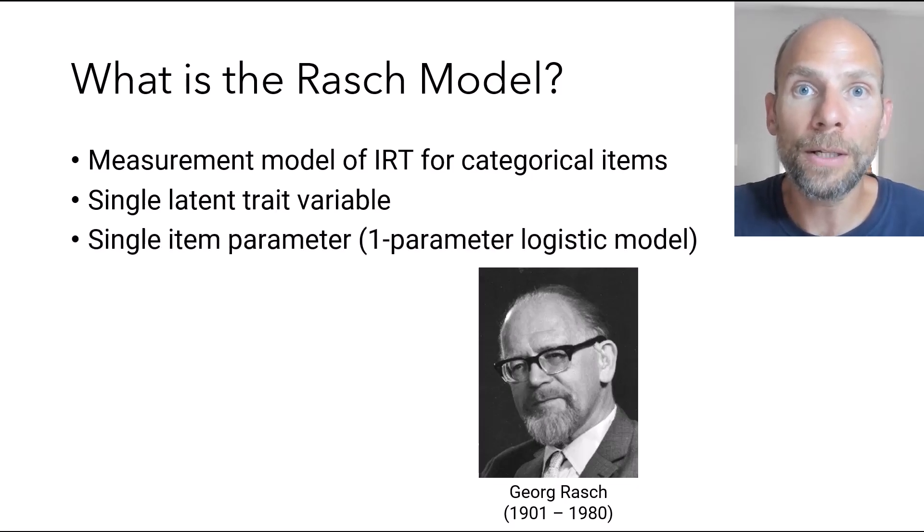Moreover, the model only contains a single item parameter and is therefore often referred to as a one parameter logistic model or one PL model. We'll see later why it's called a logistic model. But it's called a one PL model because it has only one item parameter, namely a parameter that characterizes item difficulty.